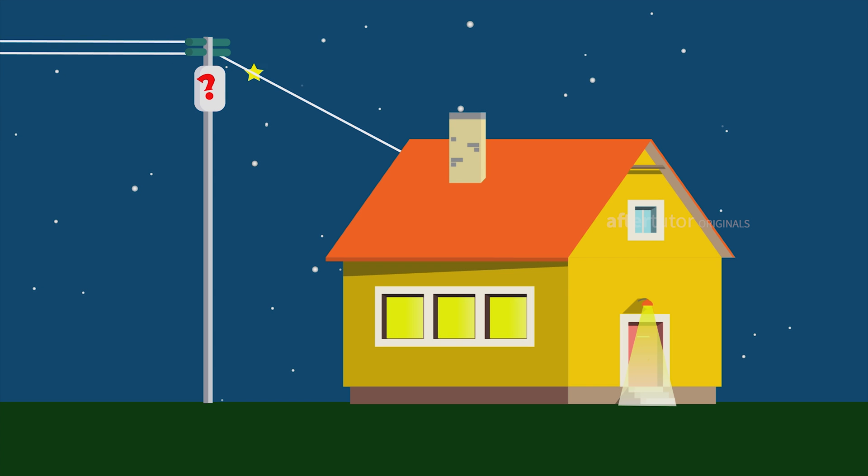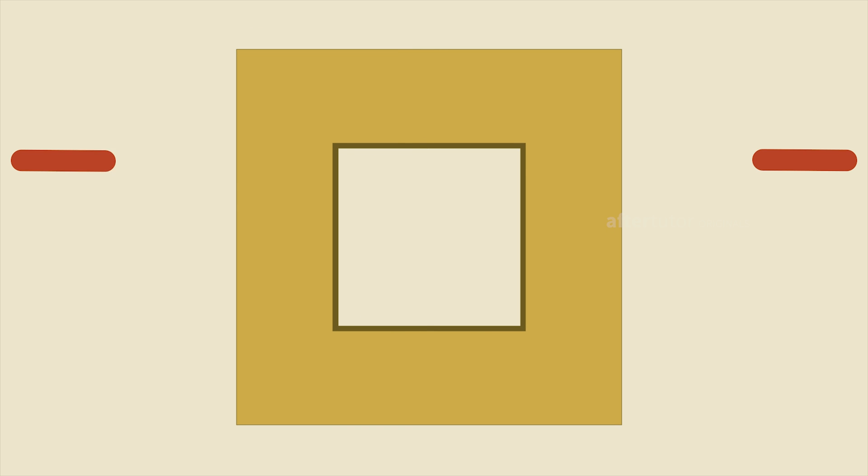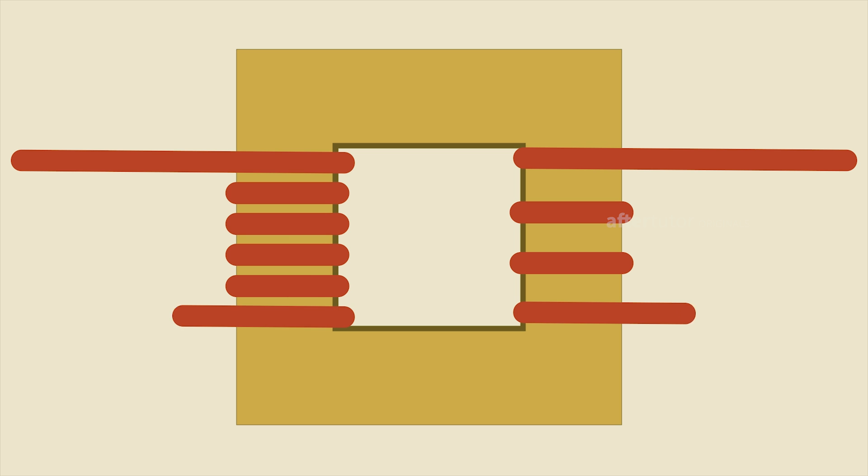But how is it done? The transformer usually consists of an iron core. The sides of the iron core are wrapped up with a coil, termed as primary winding and secondary winding.